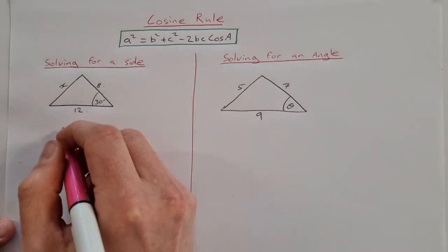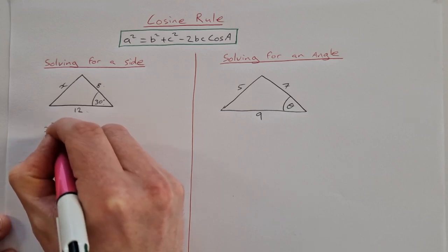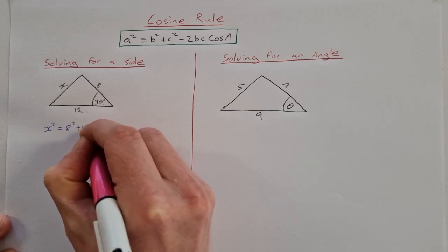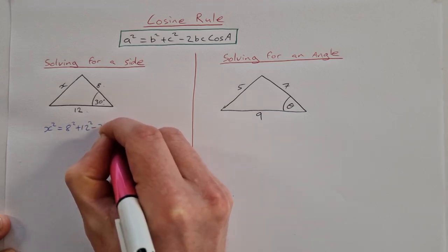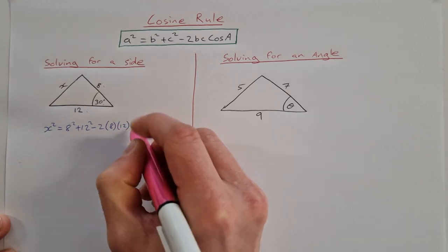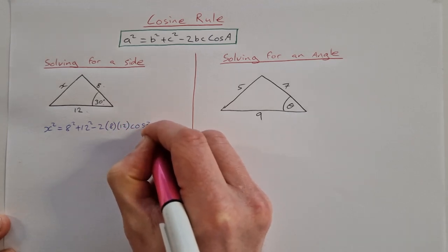So I can say x squared is equal to 8 squared plus 12 squared minus 2 times 8 times 12 cosine 30 degrees.